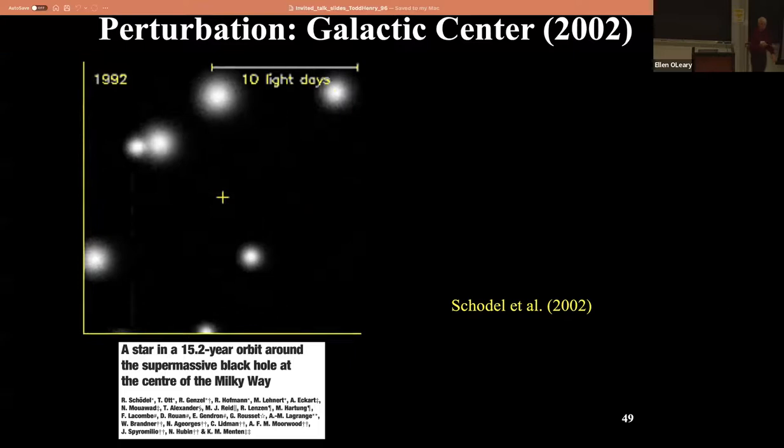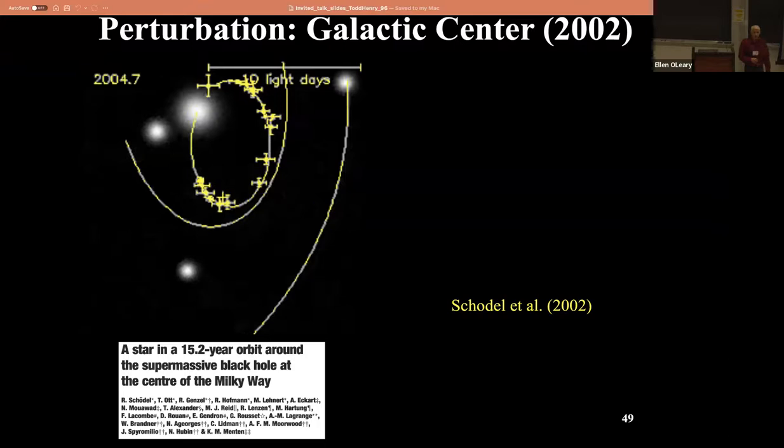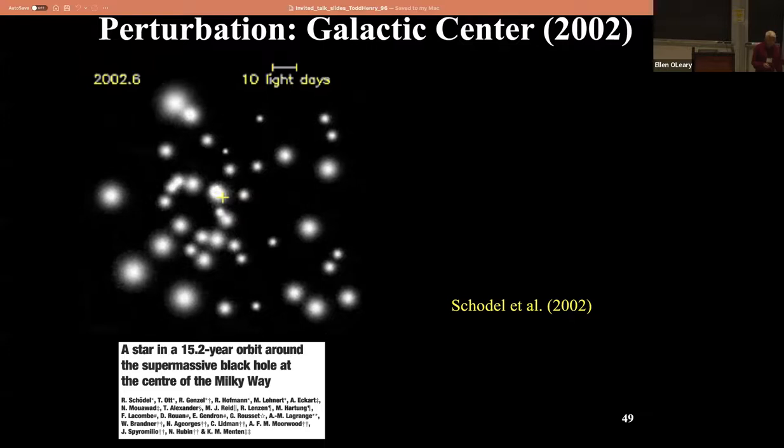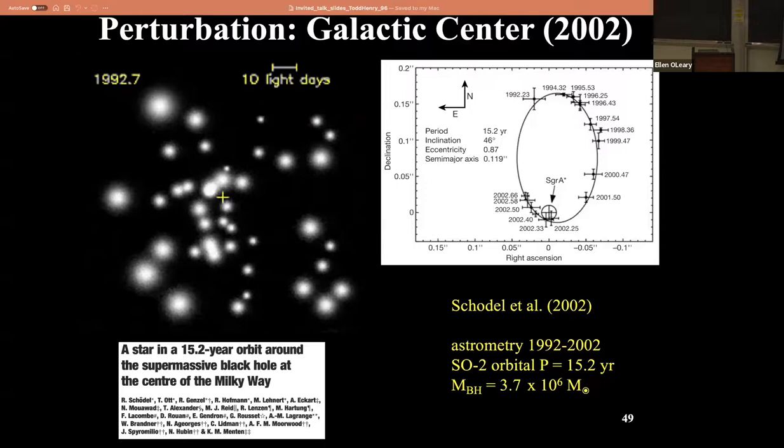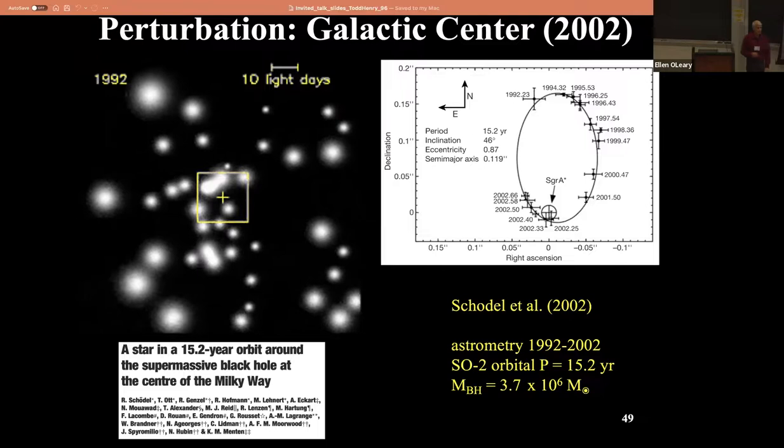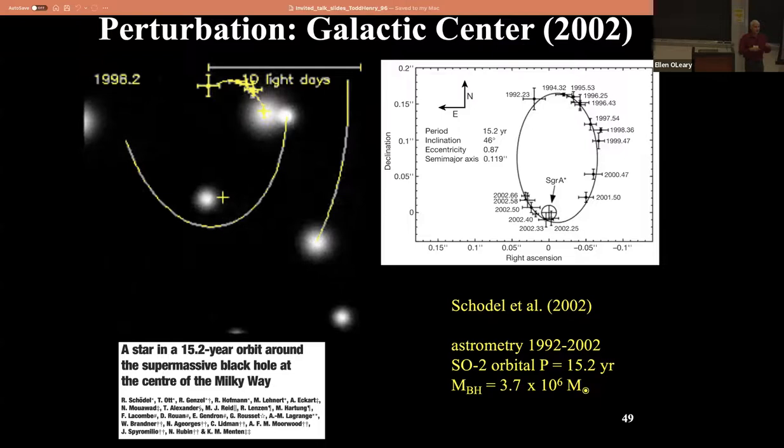Believe it or not, astrometry has led to a Nobel Prize, because Ghez et al. and Genzel et al. measured the orbits of stars going around the galactic center. They published that orbit using astrometry and AO imaging techniques in the infrared, and found that the mass of the black hole in the center of the galaxy is about four million times the mass of the sun, even though you can't see it.